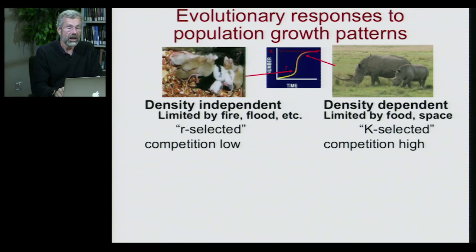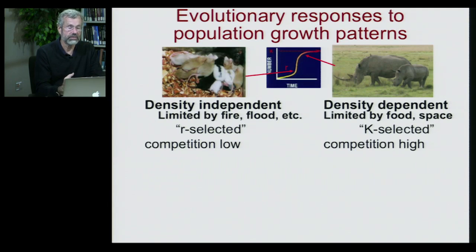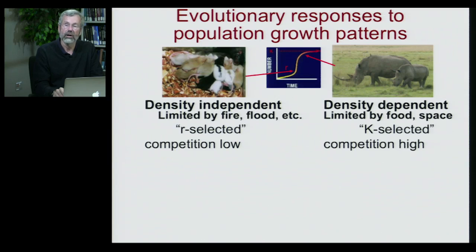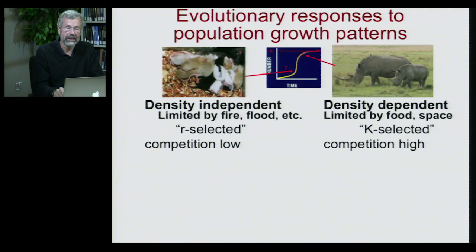In R-selected species, intraspecific competition — that is, competition between individuals of the same species — is typically very low. They're not pushing each other around very much; there's tons to eat. Life is pretty great. Whereas a K-selected species near that carrying capacity is always asking: where is the next meal coming from? How will offspring find their own territory and survive into the next generation?